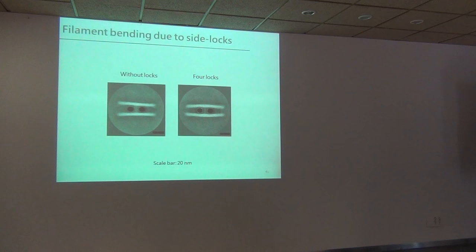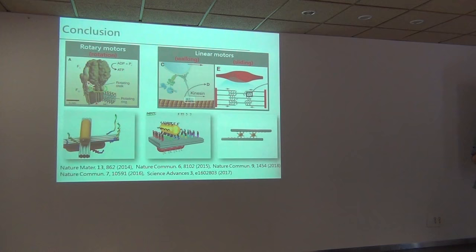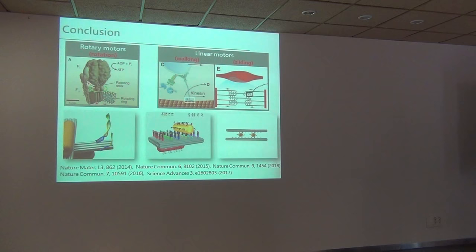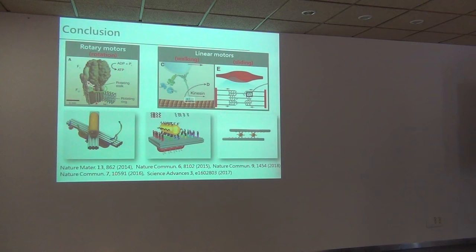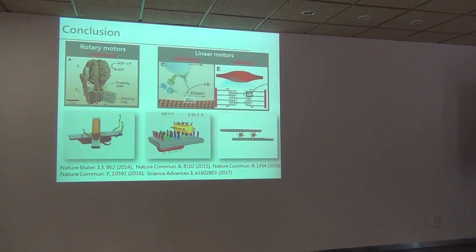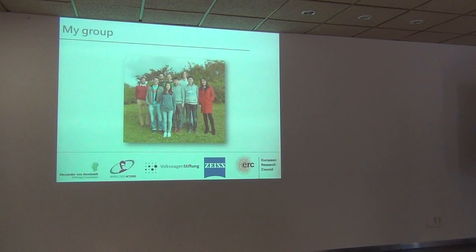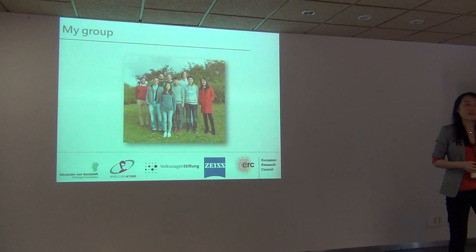In summary, by combining DNA nanotechnology and plasmonics, we can build many artificial dynamic systems to mimic the protein motors in our living cells — rotation, walking, and sliding. We are currently utilizing these artificial dynamic systems for robotic drug delivery and for cancer cell treatment. I would like to thank all my students for their hard work and all the funding agencies. Thank you very much for your attention.